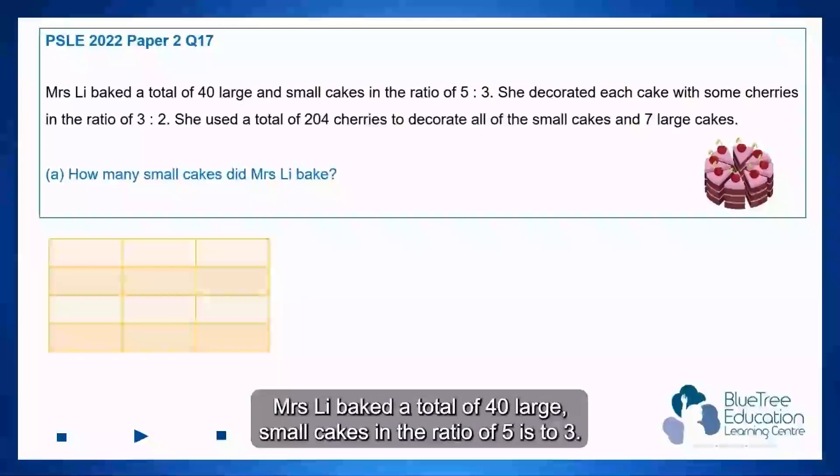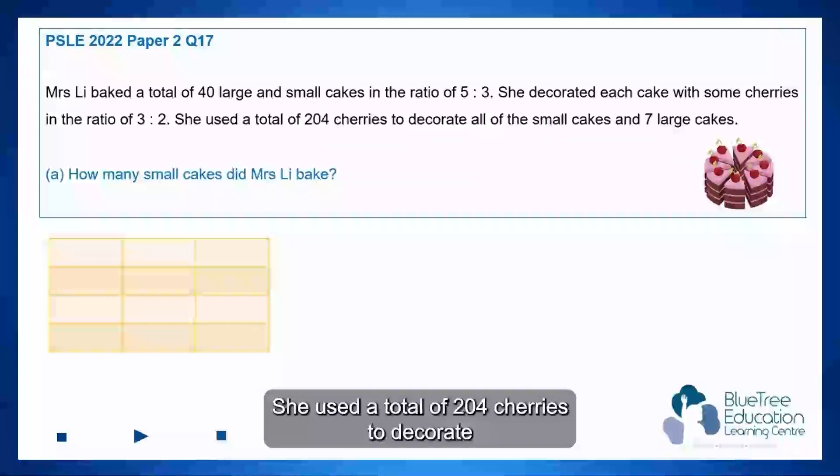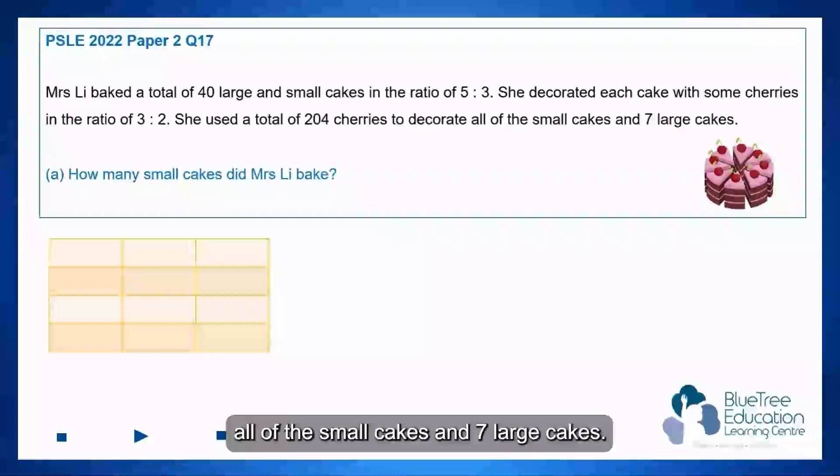Mrs. Lee baked a total of 40 large and small cakes in the ratio of 5 is to 3. She decorated each cake with some cherries in the ratio of 3 is to 2. She used a total of 204 cherries to decorate all of the small cakes and 7 large cakes. How many small cakes did Mrs. Lee bake?